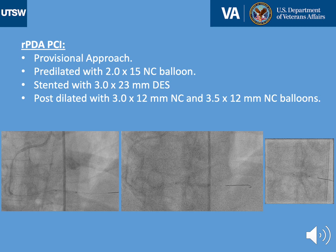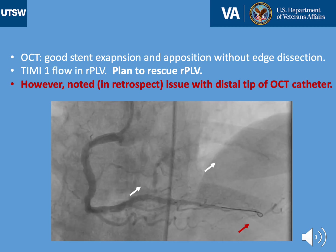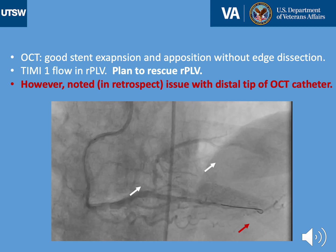We decided to proceed with PCI of the more proximal lesion first given the difficulty in delivering equipment to the distal vessel. We then used a guide extension advanced to the mid-distal RCA and proceeded with PCI of the distal RCA into the right PDA using a provisional approach. The lesion was pre-dilated, stented, and post-dilated with good expansion. OCT showed very good stent expansion and apposition without edge dissection.